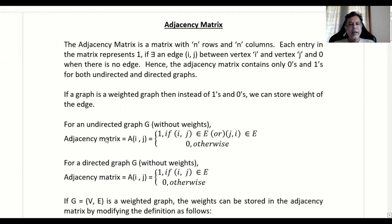For an undirected graph G without weights, the adjacency matrix will be A[i,j] where that particular element in the matrix will take 1 if (i, j) belongs to the edge set or (j, i) belongs to the edge set. Otherwise it will be taking value 0.